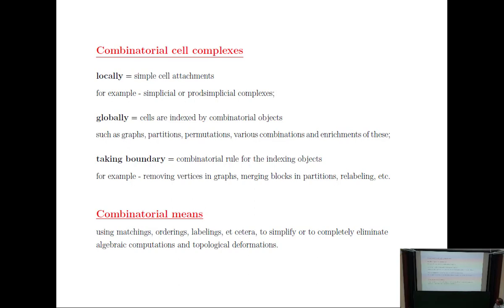For example, there is the classical problem of the chromatic number of a graph: you have a graph and ask how many colors you need to color the vertices so that any two vertices connected by an edge have different colors. That's NP-complete — a very hard problem even for small examples. But this is one case where topology can help. Algebraic invariants such as Stiefel-Whitney characteristic classes can give lower bounds for the chromatic number, but first you go through a machinery of constructing combinatorial complexes built out of all maps between graphs, and then find obstructions to the existence of certain maps.